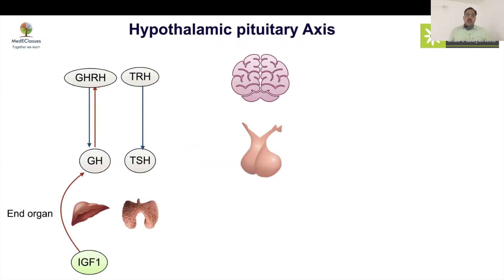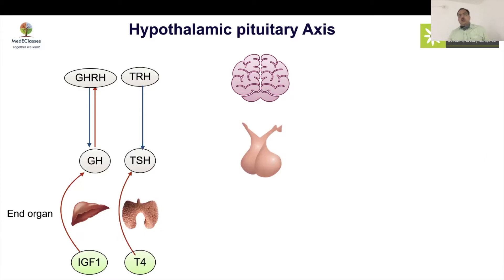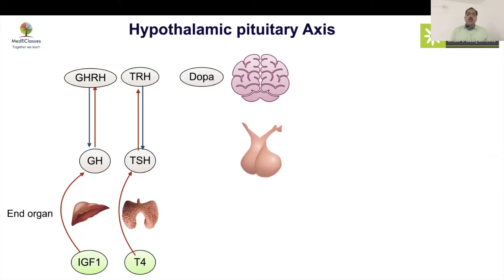TRH controls TSH, which in turn controls the production of thyroxine. Very importantly, there is also a negative feedback from thyroxine on TSH, as well as TSH on TRH.